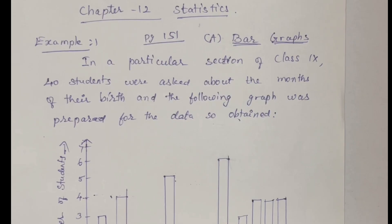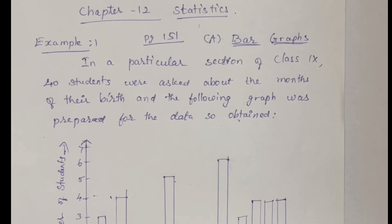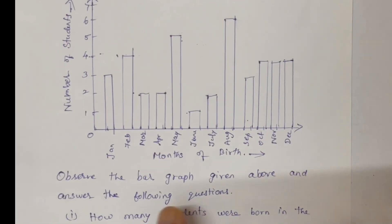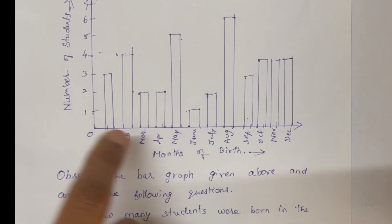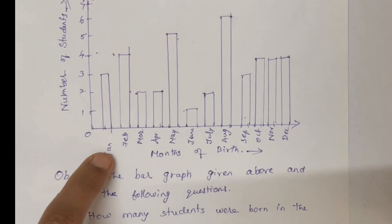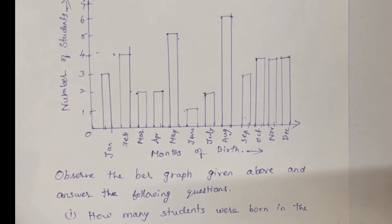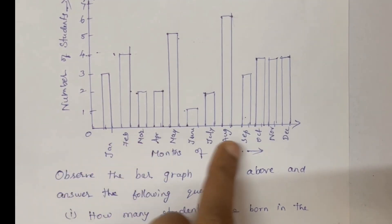Example 1: In a particular section of Class 9, students were asked about the months of their birth, and the following bar graph was prepared for the data obtained. The graph shows months of birth on one axis and number of students on the other, from January through December.